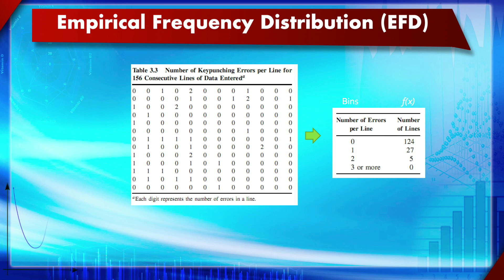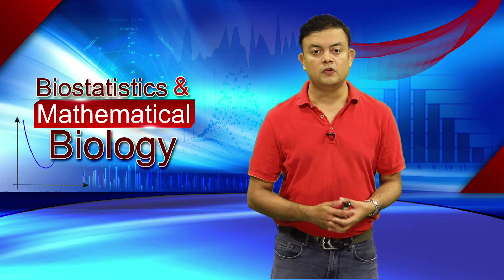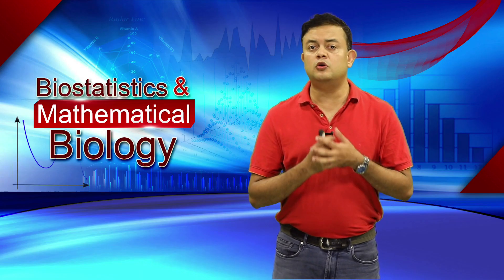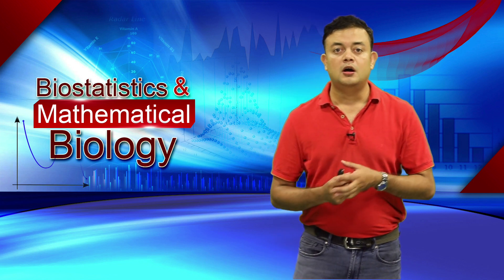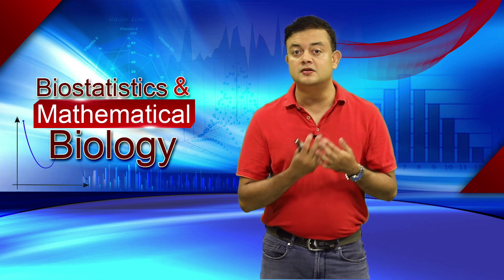As you can see, the empirical frequency distribution on the right side is a lot more easier to comprehend than the raw data. For example, most errors were zero, meaning the typist is more or less a good typist. In this case it is count data, so the bin size is just the number of errors: 0, 1, 2, or 3 or more.